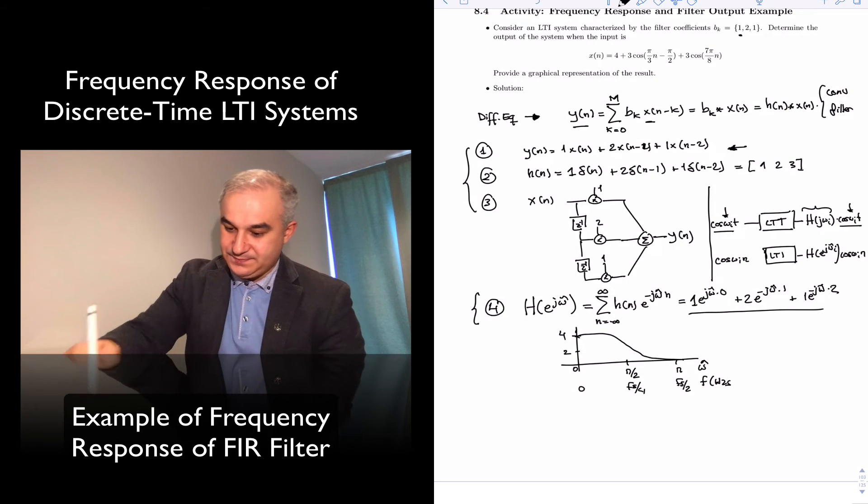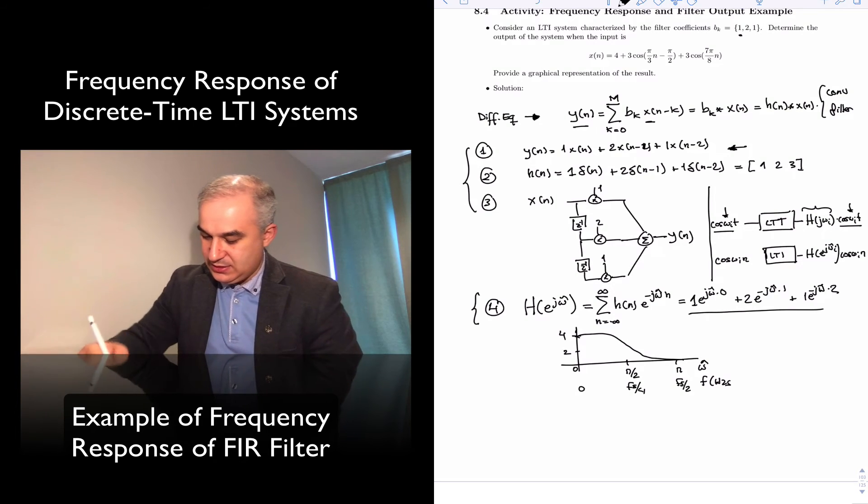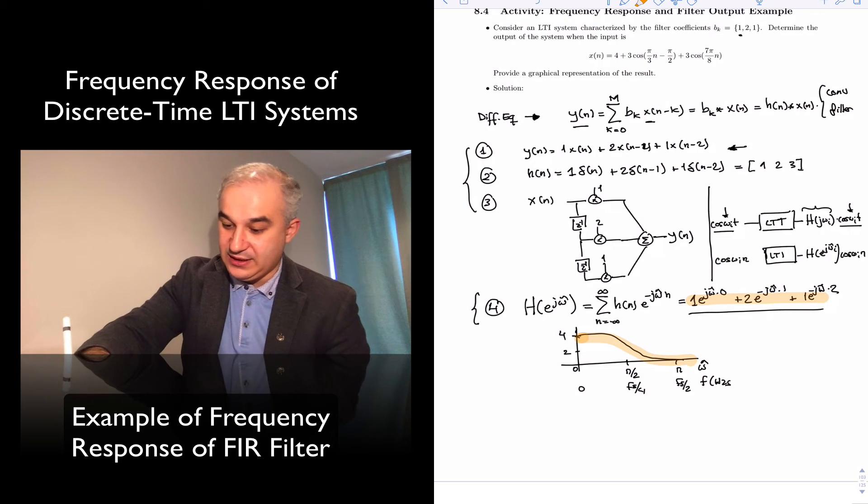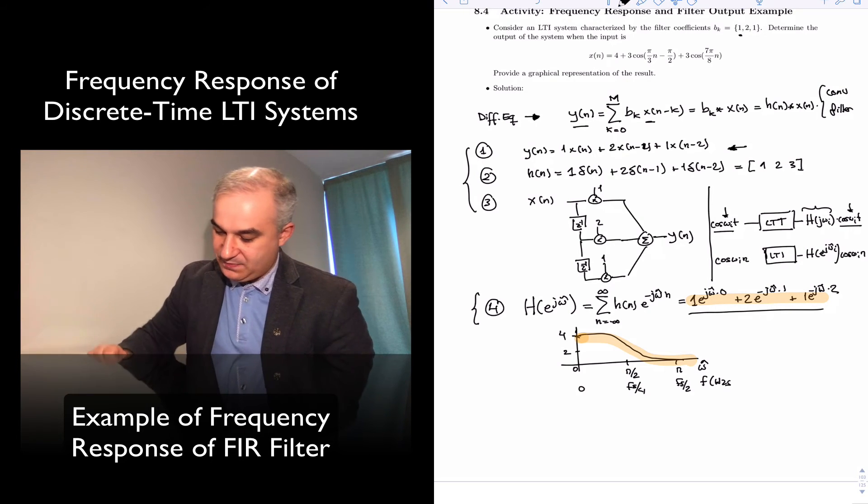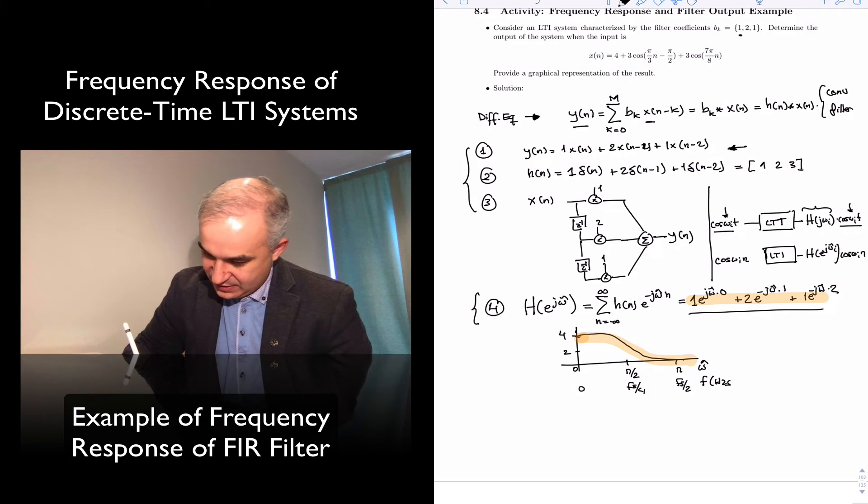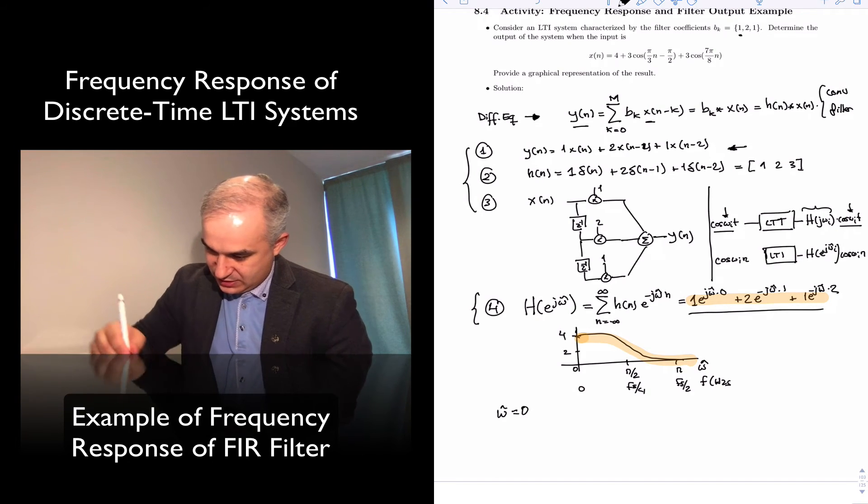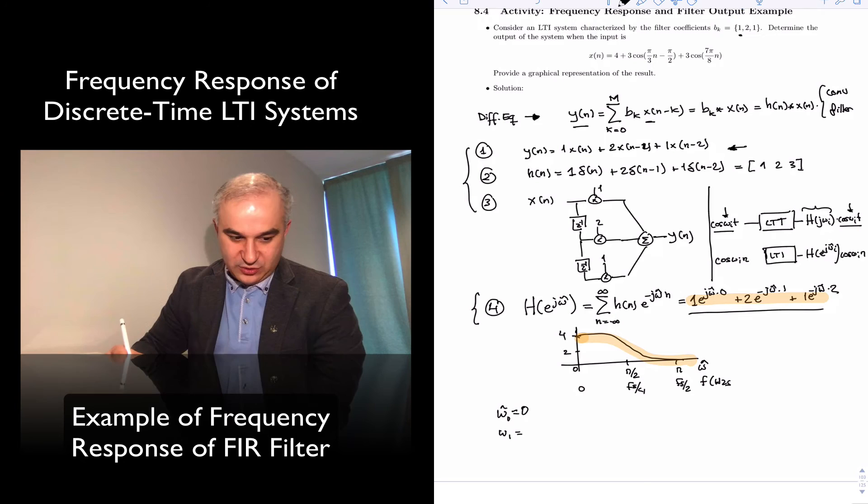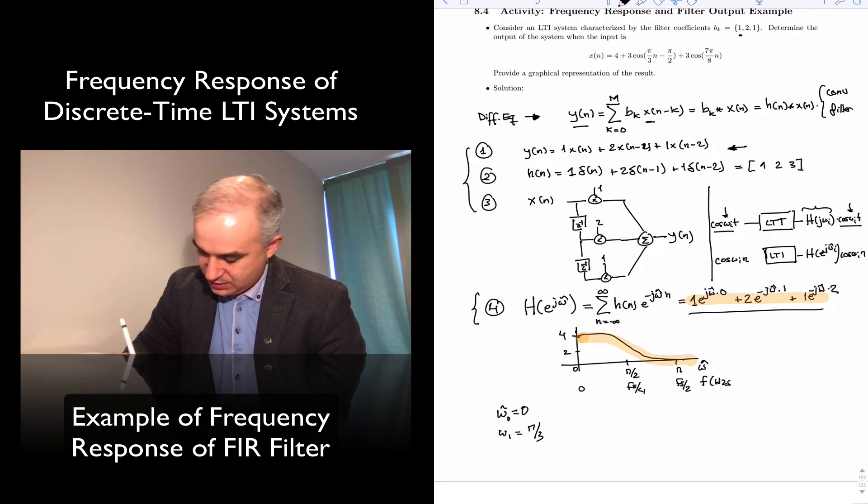So, in this case, we can just evaluate this signal at the particular frequencies by plugging it into this equation. Or, plugging it into the equation that we already had. In the calculator, it's very easy to say, in this case, what are the frequencies? We have 4 is at omega hat equals 0. Then, we have an omega hat. So, that's the first frequency, 0. Frequency 1 is at omega hat pi over 3. Frequency 2 is at omega 7 pi over 8.